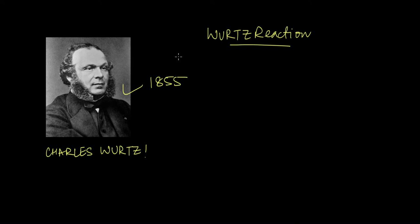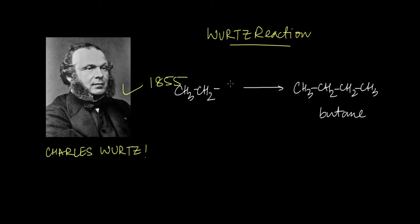This reaction is called Wurtz's reaction. Wurtz's reaction actually involves the preparation or the formation of an alkane — something like butane — from an alkyl halide. If you have to make butane, then we need to take ethyl bromide. So what we need to do is take ethyl bromide in the presence of some metal.